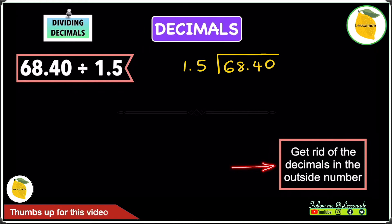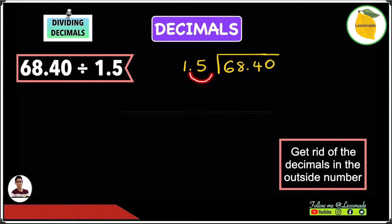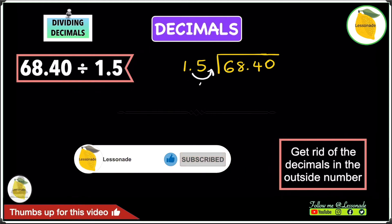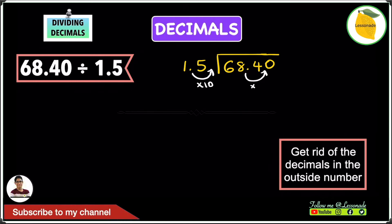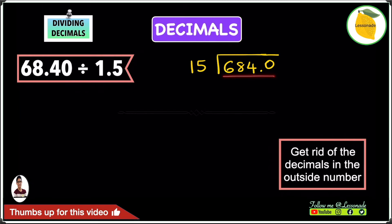The first step is to get rid of the decimal in the outside number, which is 1.5. Move the decimal point one space to the right — in other words, multiply by 10. Whatever you do to the outside number, you also do to the inside number, so move that decimal point one space to the right as well. We're now left with 15 as the outside number and 684.0 as the inside number.